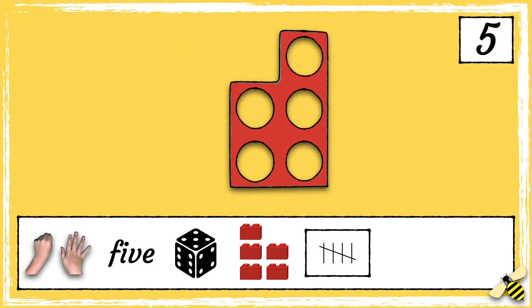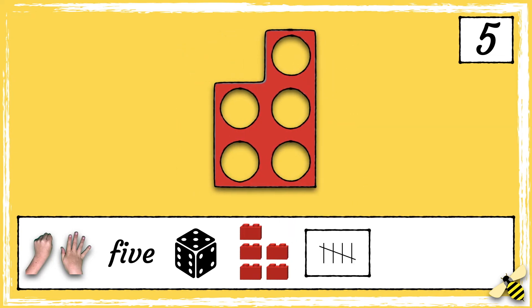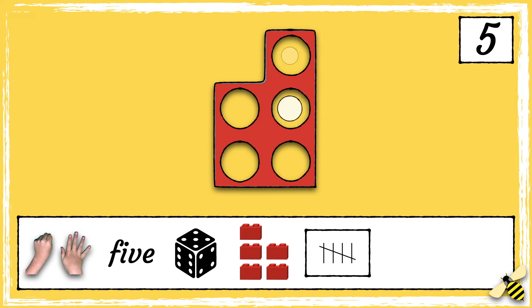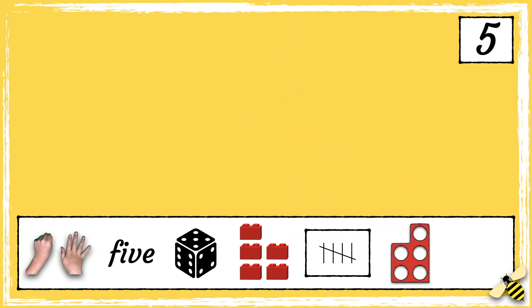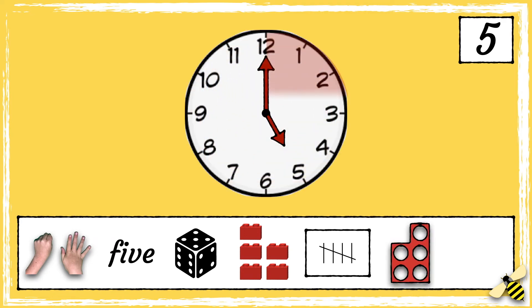Here is the Numicon piece that shows 5. 1, 2, 3, 4, 5. Here is 5 o'clock.